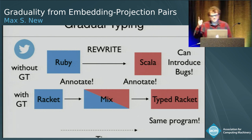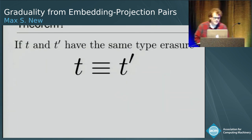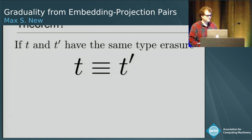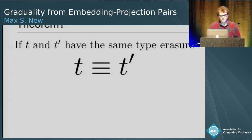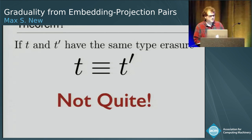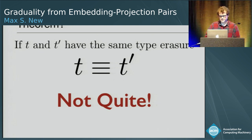I'm a PL semanticist, so when I see a property like "can't introduce bugs," I think: theorem, which is at the top of this slide. How would we state this as a theorem? Well, we could say if all I did was add type annotations to the program, then T and T prime have the same type erasure, so they should be equivalent programs. But as you might have seen from the last couple of talks, this isn't the model that gradual typing provides.